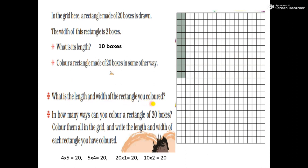What is the length and width of the rectangle you colored? You have to tell the length and width. How many ways can you color a rectangle of 20 boxes? Color them all in the grid. 10×2=20. 4×5=20. 4 is the length, 5 boxes of width. 20×1=20, so 20 boxes of length and 1 box of width. These are our different rectangles.